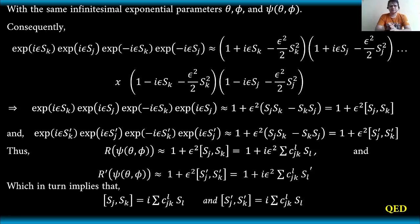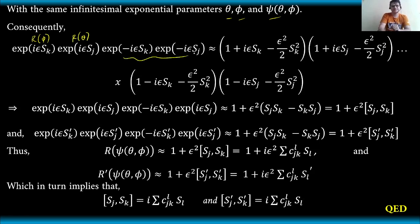With the same infinitesimal exponential parameters theta, phi, and psi as a function of theta and phi, by multiplying those rotation matrices, we can expand these exponents in terms of a series. This gives us (1 + i epsilon Sk - one-half epsilon squared Sk squared)(1 + i epsilon Sj - one-half epsilon squared Sj squared) crossed with (1 - i epsilon Sk - one-half epsilon squared Sk squared)(1 - i epsilon Sj - one-half epsilon squared Sj squared).